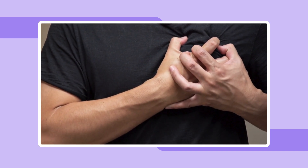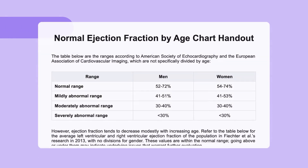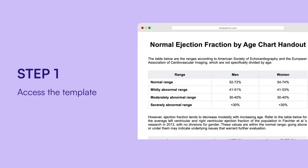Using our normal ejection fraction by age chart template involves a straightforward process that aids healthcare professionals and individuals in assessing heart function. Here's a breakdown of the steps involved. First, access the template via the link in the description, go to our templates library where you can download a free PDF version, or use the in-app template on our CarePatron app.